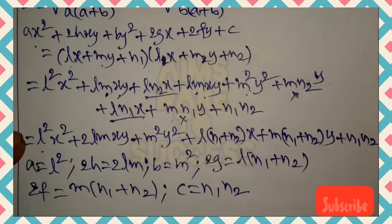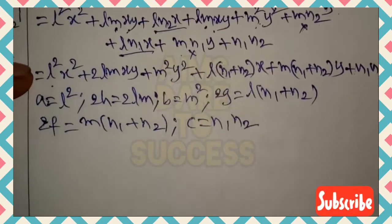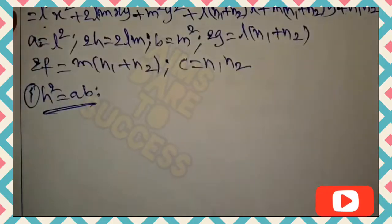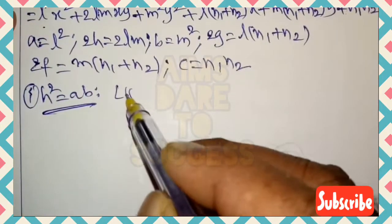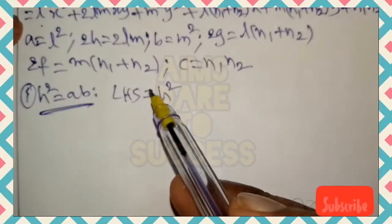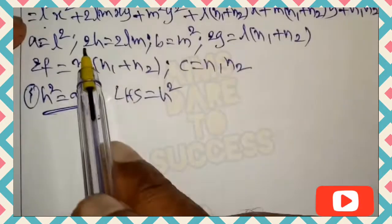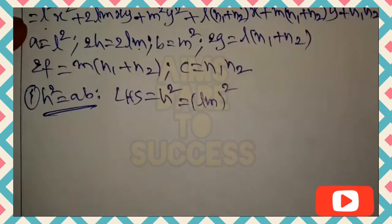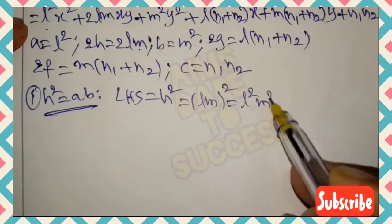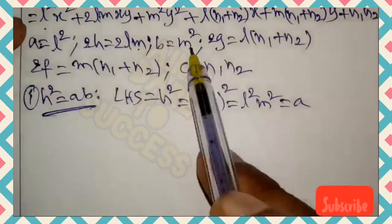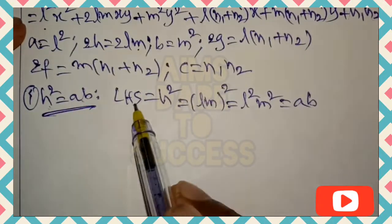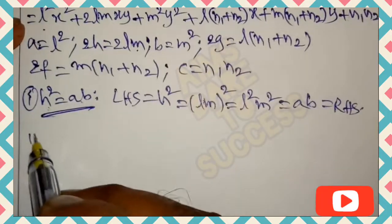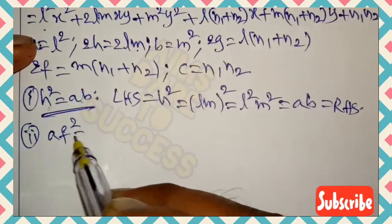Now proving the first part: h² = ab. Taking LHS = h². Since 2h = 2lm, h = lm, so h² = (lm)² = l²m². Now l² = a and m² = b, so h² = ab = RHS. Therefore LHS = RHS, and the first part is proved.